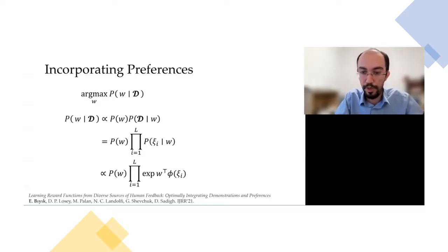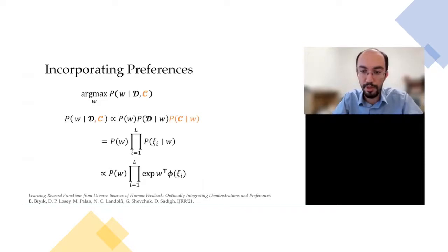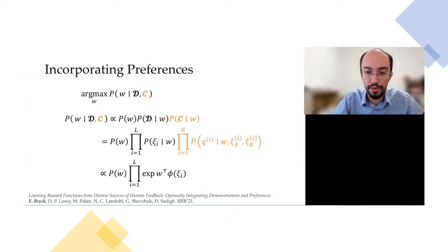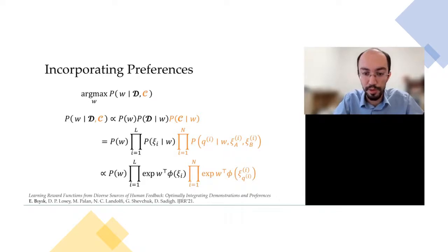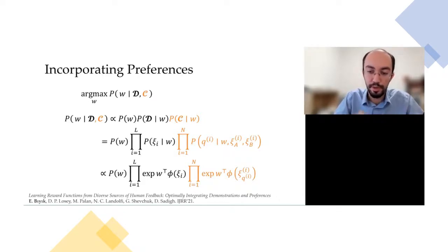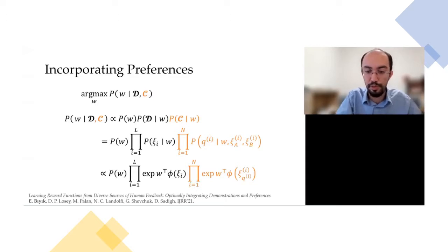Let's add comparison data into the Bayesian IRL framework. In this new setup we have a second dataset for comparisons, where each data point consists of two trajectories and a user response. Assuming conditional independence of demonstrations and comparisons, we can factor out the likelihood of the comparison dataset. We again make the noisy optimal assumption to model how humans give responses to comparison queries — but importantly, this assumption doesn't hurt us here because the robot is generating its own trajectories and the human is just choosing which they prefer.